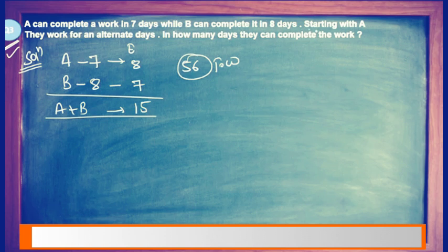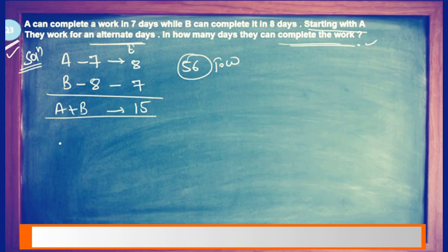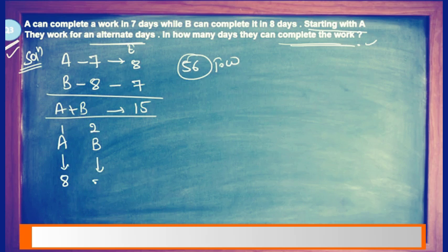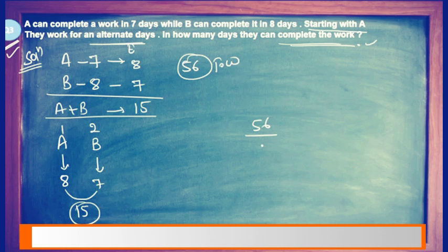Starting with A, they work on alternate days. In how many days can they complete the work? On the first day A will work, on the next day B will work. A has efficiency 8, B has efficiency 7, and together they take 15 efficiency. So divide 56 by 15.